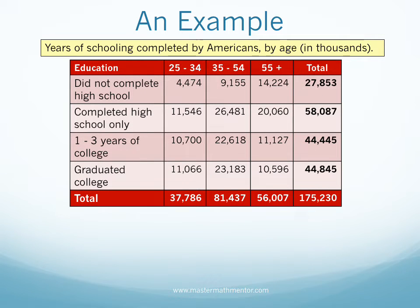Let's examine data with much larger numbers. This table represents the years of schooling completed by Americans, broken down by age, in thousands of people. There are three age groups — 25 to 34, 35 to 54, and over 55 — and four education categories: did not complete high school, completed high school only, had one to three years of college, and graduated college. The two-way table has three times four, or 12, joint frequencies. Column and row totals are given, and the sum of each is 175,230.